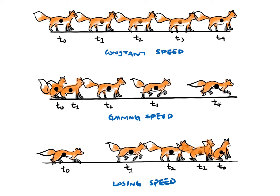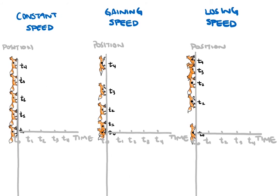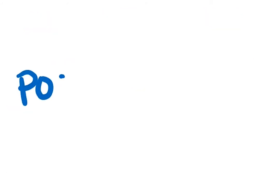We can translate this into a graph of the fox's motion by separating our labels. Since the fox's position is dependent upon how much time the fox spends moving, we can place the fox's position on the vertical y-axis and time on the horizontal x-axis. Each position marker is taken at a different time, so we'll place these positions with the times they're associated with. The first position marker is at t0, the next at t1, then t2, t3, and the final position at t4. What do these points form on each position-time graph?